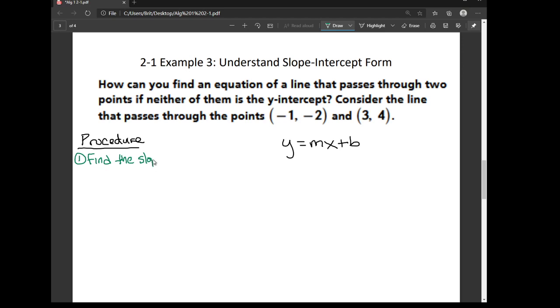Now remember, to find the slope you can do either rise over run, or you can use this equation, m equals y2 minus y1 over x2 minus x1.